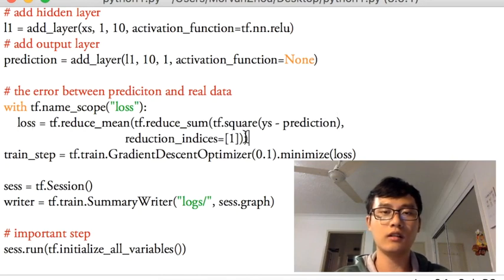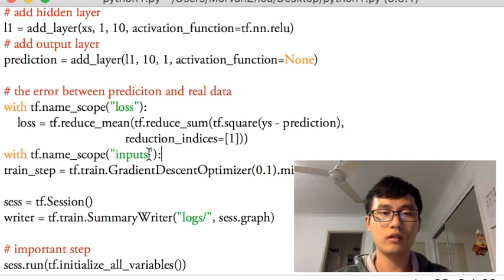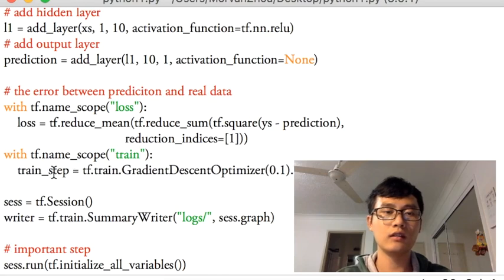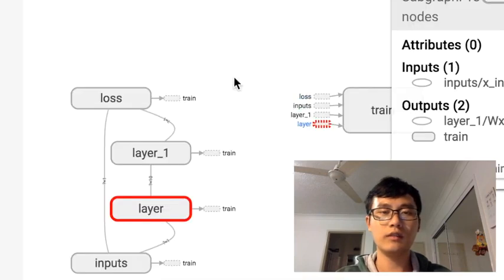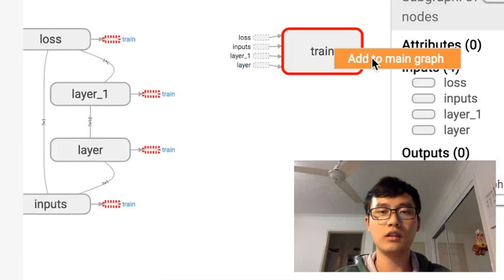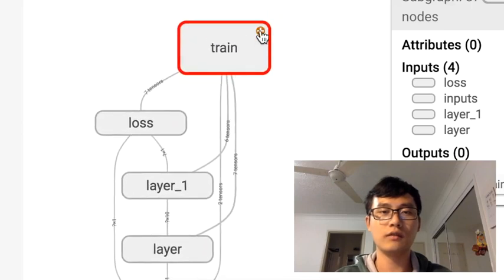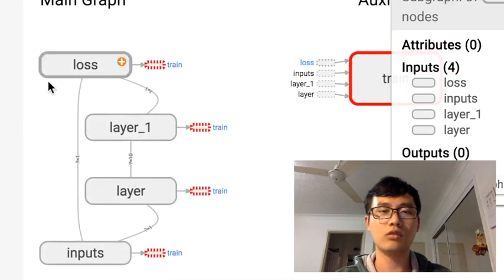And lastly, I think we could do it for the train step using name_scope train. So in this big picture, we just separate the train. But if you want, you can add it to the main graph. Normally, we just separate the train because the train is not the structure of the whole neural network.